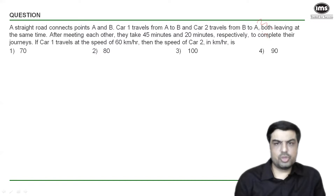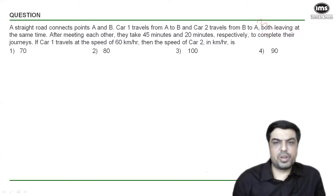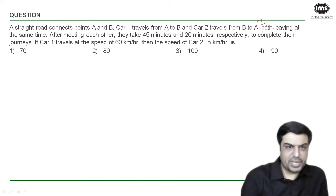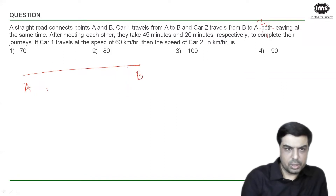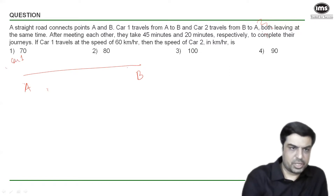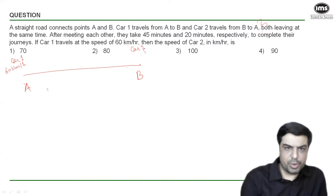Two cars are traveling — one from A to B and the second from B to A — and they meet somewhere. After meeting each other, one car takes 45 minutes and the other takes 20 minutes to complete their journeys. The speed of the first car is given and the speed of the second car is required. Car one travels from A to B at 60 km/h; car two travels from B to A at speed x km/h.